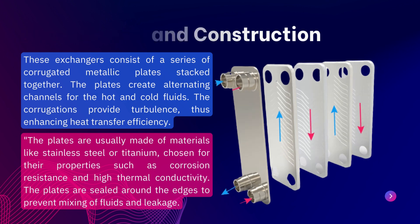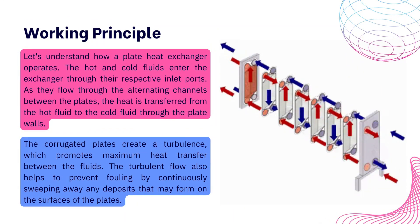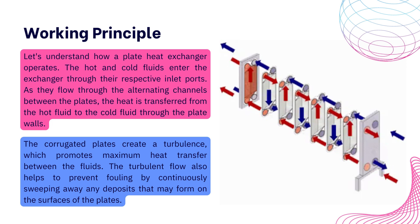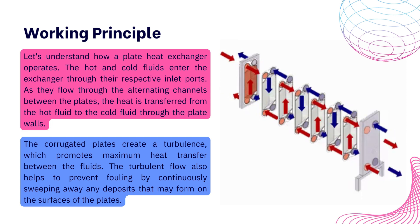Now let's understand the working principle of a plate heat exchanger. Hot and cold fluid enter through their respective inlets and flow in channels between the plates alternately. Heat transfer from hot fluid to cold fluid takes place through the plate wall, which also prevents intermixing — this is indirect heat transfer. The corrugations create turbulence, resulting in maximum heat transfer between the fluids. The turbulent flow also helps in the continuous removal of foulants and deposits from the surface of the plates.